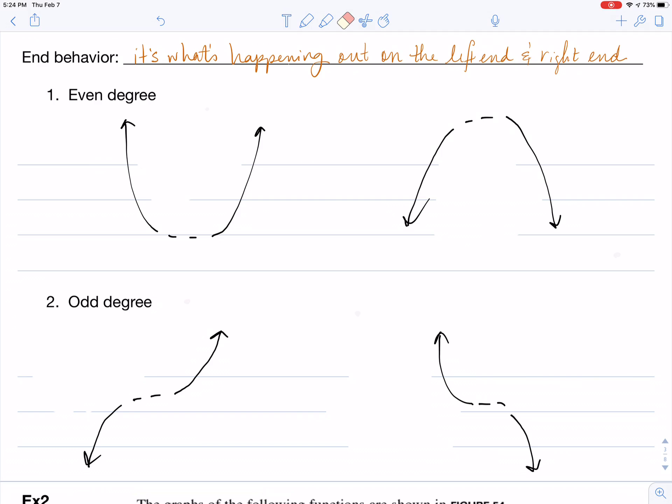And so it's the same thing if I have a degree that is even, maybe a degree of 2 or 4 or 6. If the leading coefficient is positive, both ends will be up. If the leading coefficient is negative, both ends will be down.